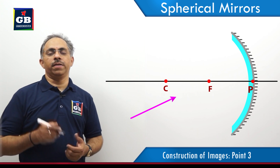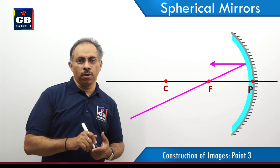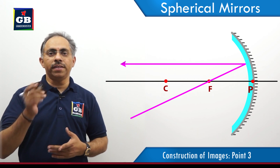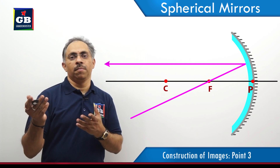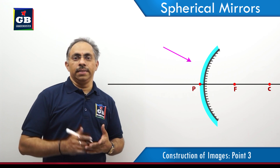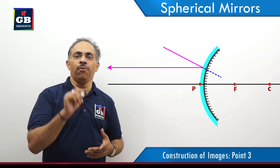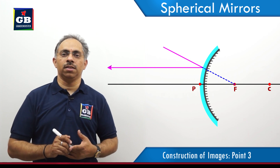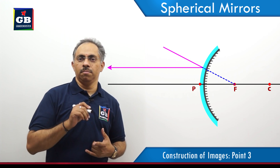The third point: whenever a light ray passes through the focus and is incident on a concave mirror, after reflection it will pass parallel to the principal axis of the concave mirror. In the case of a convex mirror, if any light ray is directed towards the principal focus of the convex mirror, after reflection it will pass parallel to the principal axis of the mirror.